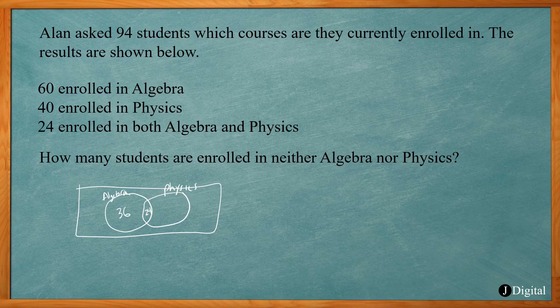Now physics we know there's 40 altogether. We already have 24, so that leaves us with 16. 24 plus 16 is 40.